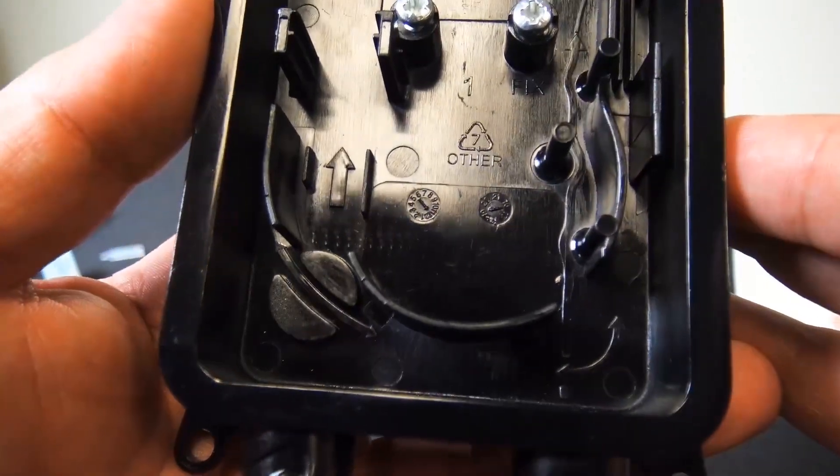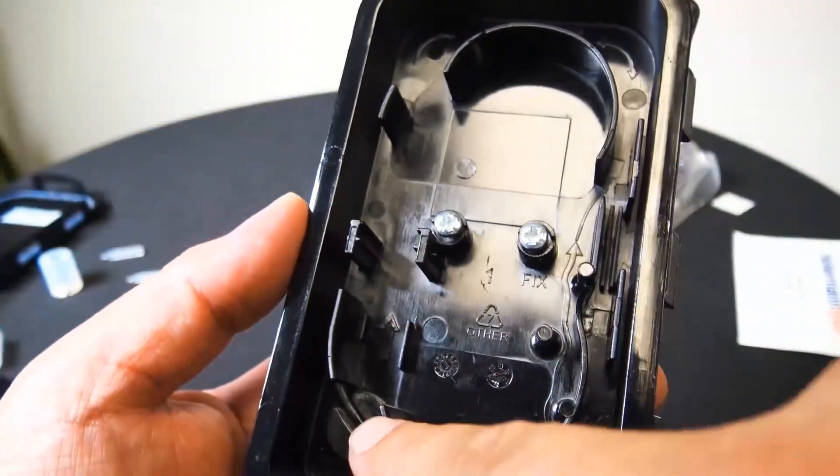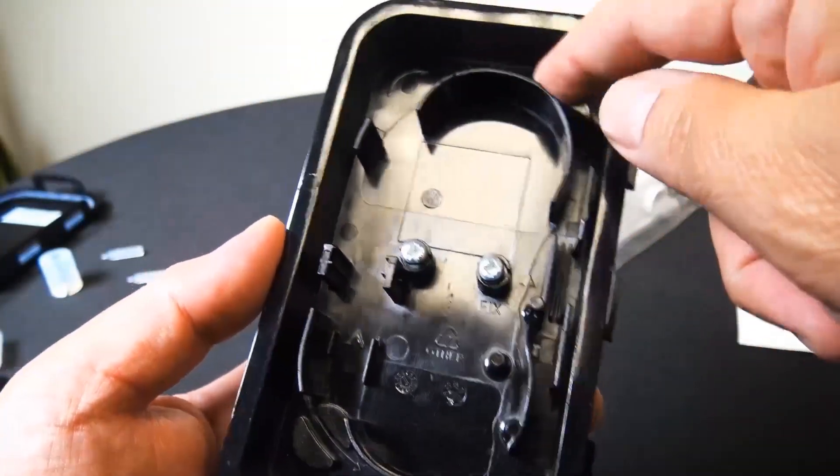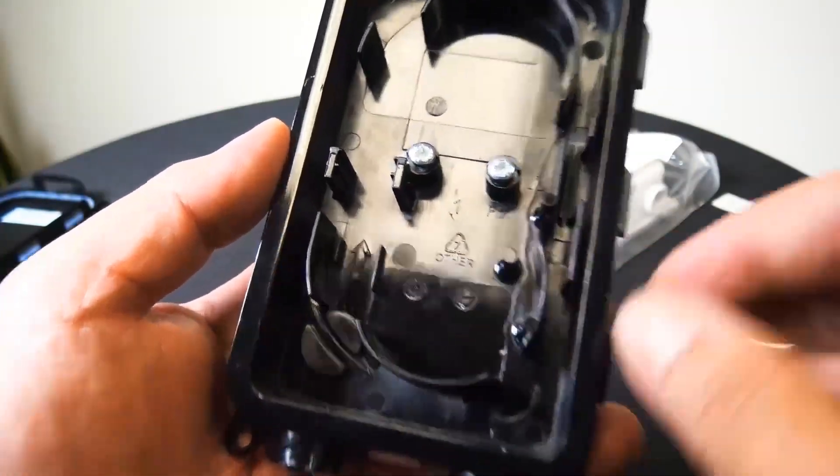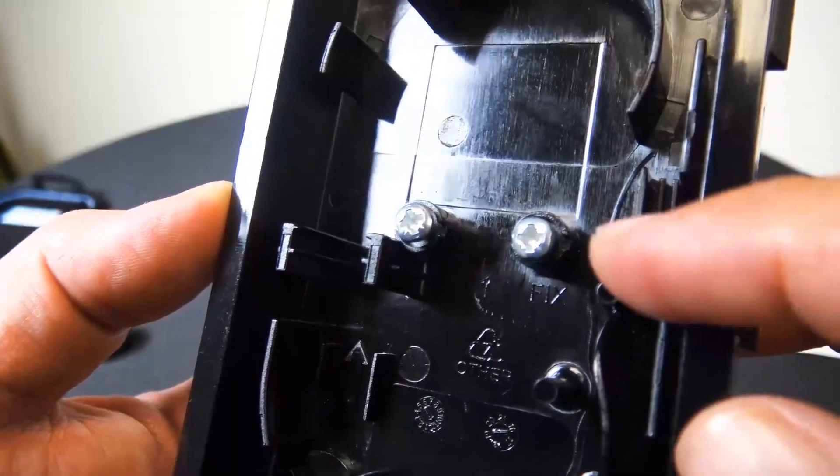And inside, as you can tell, you can make your nice loop there. And you also have the screws right there, the two screws so you can go ahead and tighten down the Kevlar from your fiber cable.